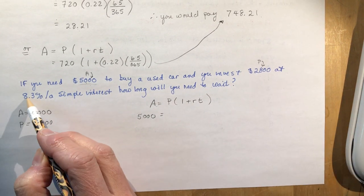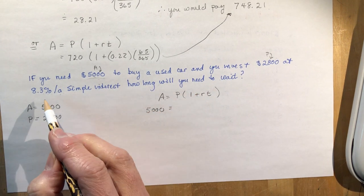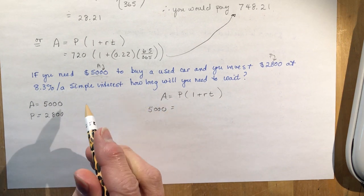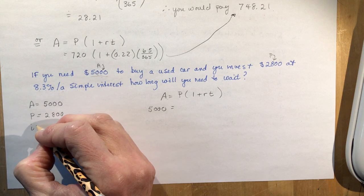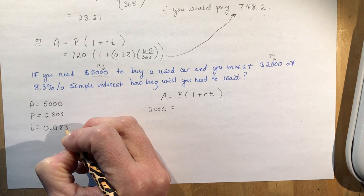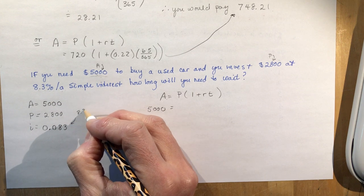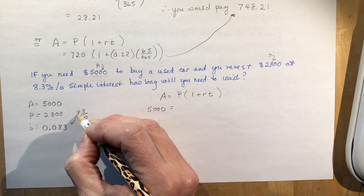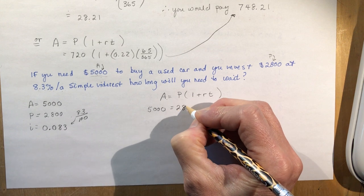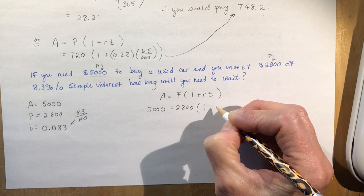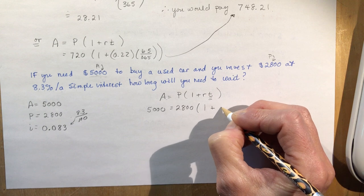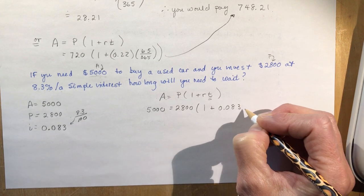I want $5,000, I have $2,800 to put in the bank, and I want to know how long it's going to take. So I'm solving for T. 5,000 equals 2,800 times 1 plus 0.083 times T.